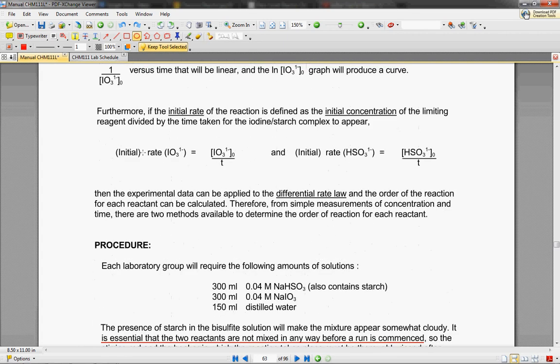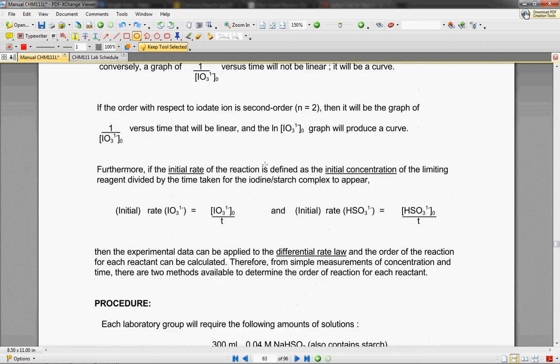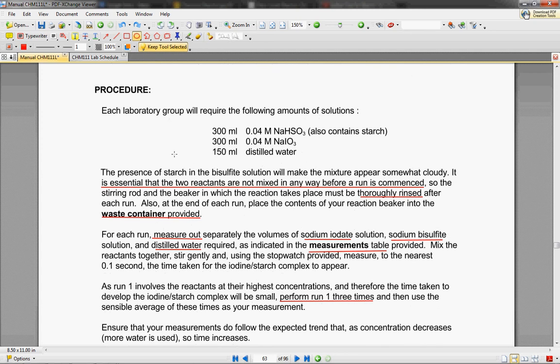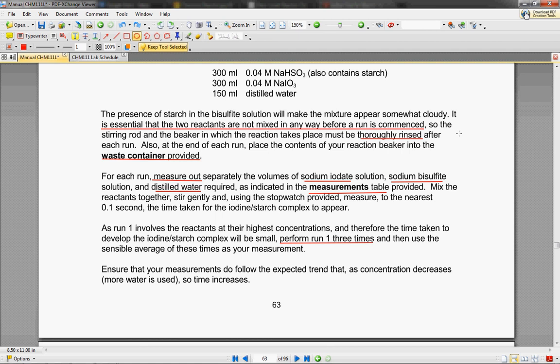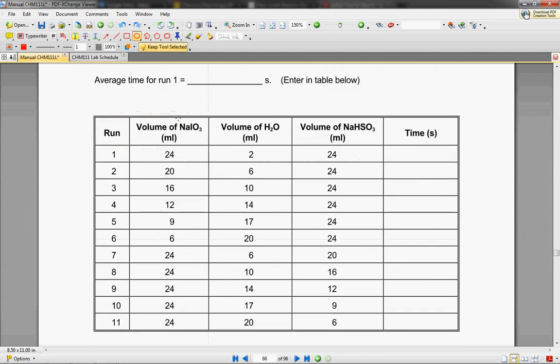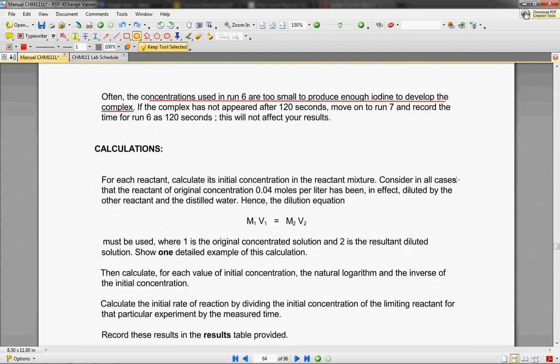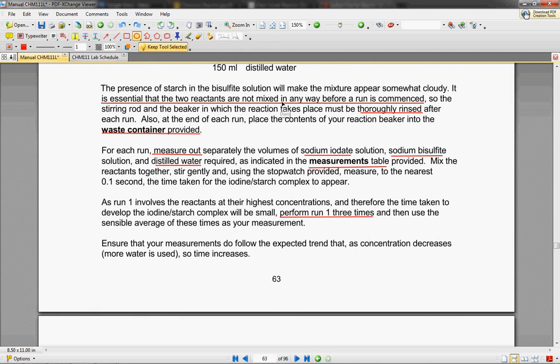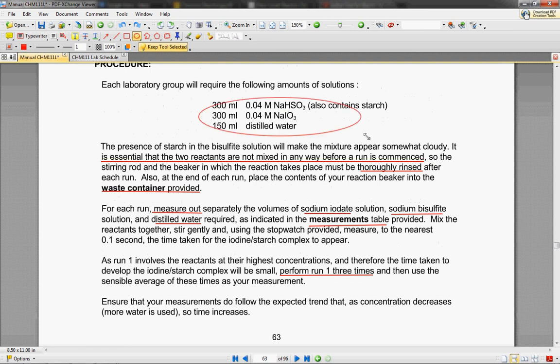You guys can look over this stuff a little bit more, but it talks about your initial reaction rates and a little bit more in detail of how to calculate some of the things we'll be doing in the lab. Each laboratory group will need the following amounts of solutions, and at the very bottom of the lab, you've got different runs down here that will tell you what volume of this compound, what volume of water, what volume of this compound, and how long it took for that reaction to take place. These two reactants should not be mixed in any way before we start. The stirring rod and beaker must be thoroughly rinsed after each run, and everything will be put into the waste container.